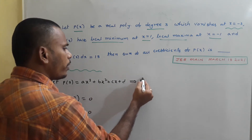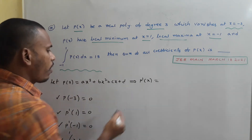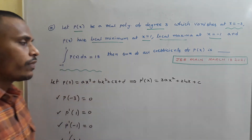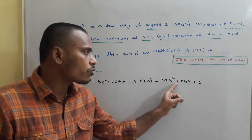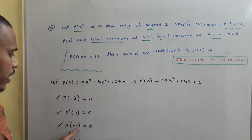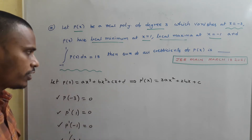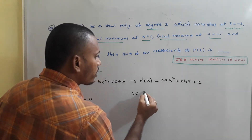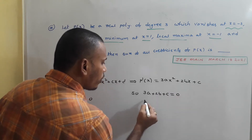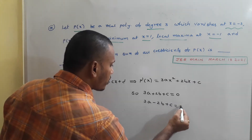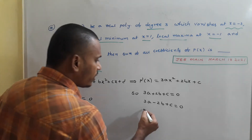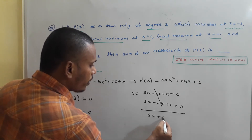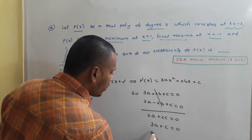P'(x) is the derivative, which is 3Ax² + 2Bx + C — a quadratic. Since 1 and -1 are roots of P'(x), we use P'(1) = 0 to get 3A + 2B + C = 0, and P'(-1) = 0 to get 3A - 2B + C = 0. Adding these two equations, 2B terms cancel, giving 6A + 2C = 0, or 3A + C = 0.